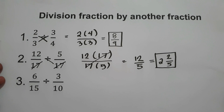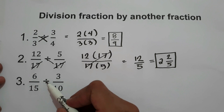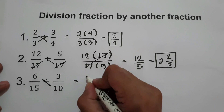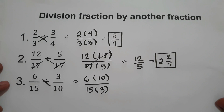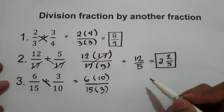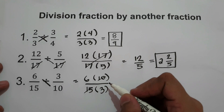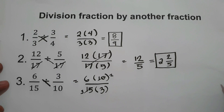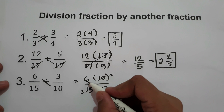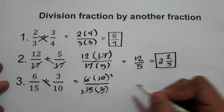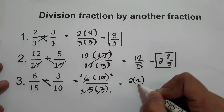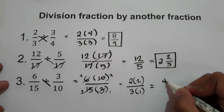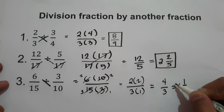What about number 3? We have 6/15 divided by 3/10. Cross multiplying gives us 6 times 10 over 15 times 3. We can simplify: 10 and 15 are both divisible by 5, so 10 becomes 2 and 15 becomes 3. Then 6 and 3 are divisible by 3, so 6 becomes 2 and 3 becomes 1. That gives us 2 times 2 over 3 times 1, which is 4/3, or 1 and 1/3. That is our final answer.